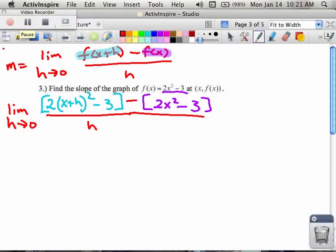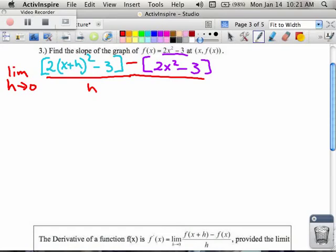So now as I start to work out some of this algebra stuff, I have the limit as h is turning into zero. And then I can't really do all that stuff in my head at once, so I'm going to go with 2 times parentheses x squared plus 2hx plus h squared.